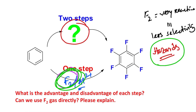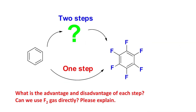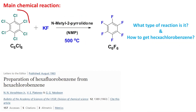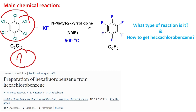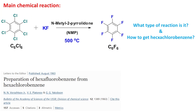Now the question is: what is the two-step process? What is the intermediate used for this preparation? We understood the advantages and disadvantages. Now the intermediate compound is hexachlorobenzene. So if you treat hexachlorobenzene with potassium fluoride, what will happen? If potassium fluoride reacts in the presence of NMP — this is N-methyl-2-pyrrolidone.